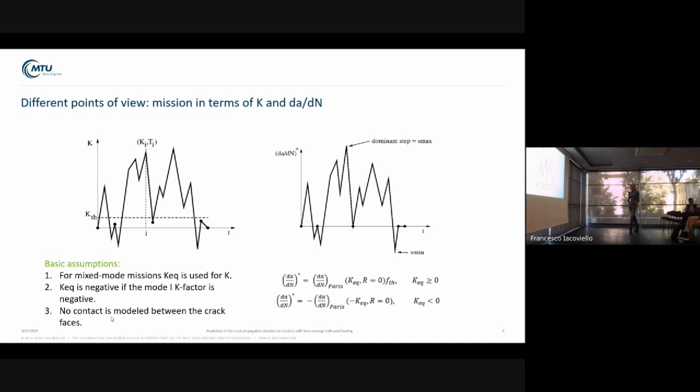On the right-hand side, there's an alternative representation in which, from the K factor, we calculate a dA/dN star. So we calculate the crack propagation rates.